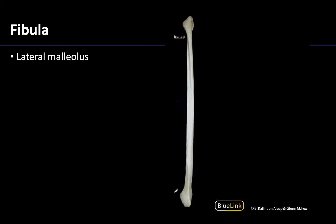Now on to the much thinner and non-weight-bearing fibula, which is the lateral bone of the leg. On the distal end of the fibula, the dominant structure is the lateral malleolus. It's less bulbous in shape and more tapered than the proximal head of the fibula — one of the more difficult things is differentiating what's proximal and what's distal — and really that lateral malleolus tends to be a little longer and more tapered than the head of the fibula.